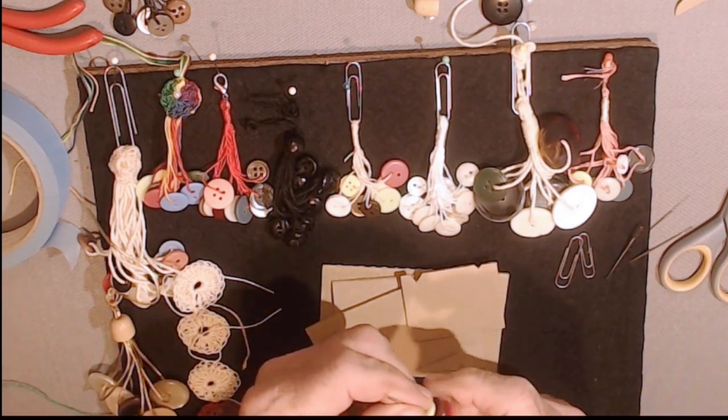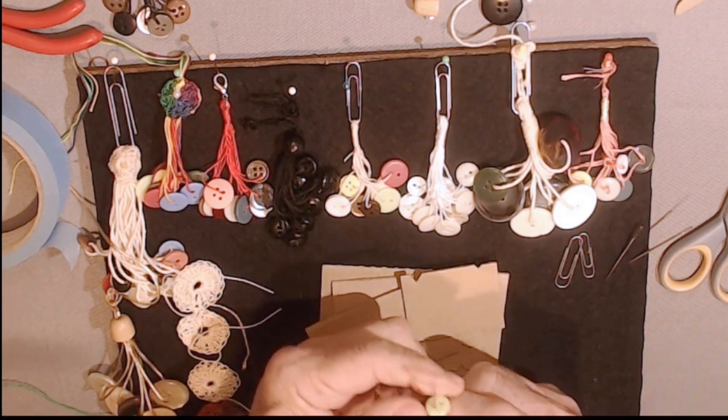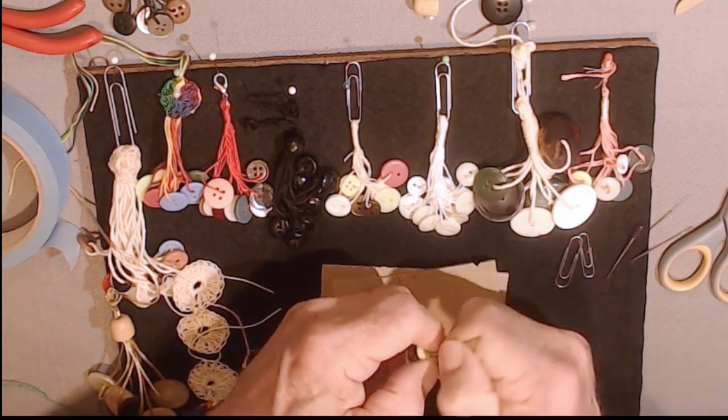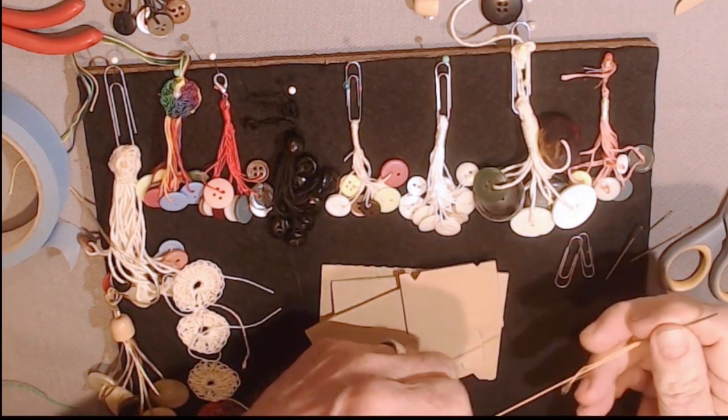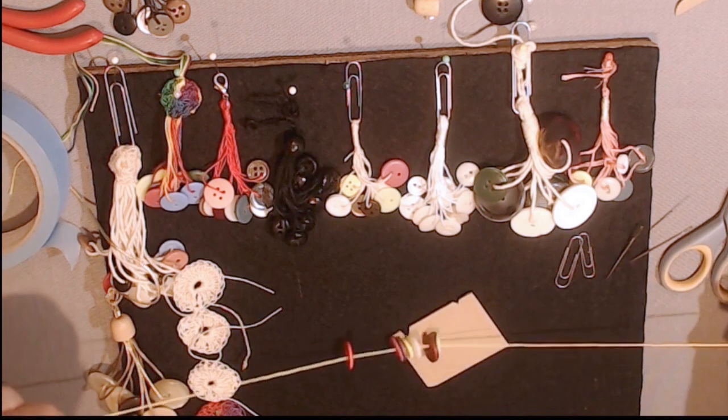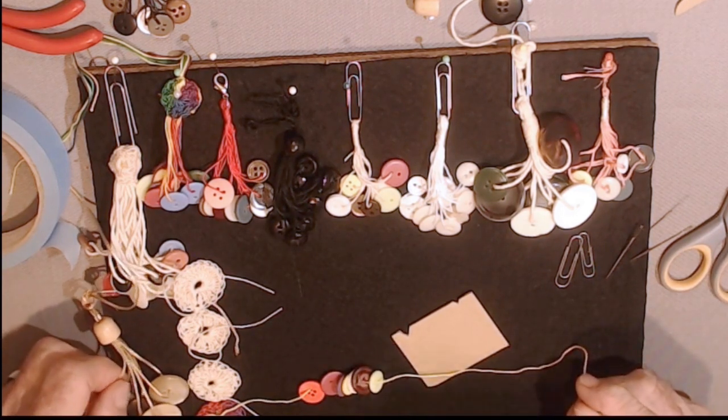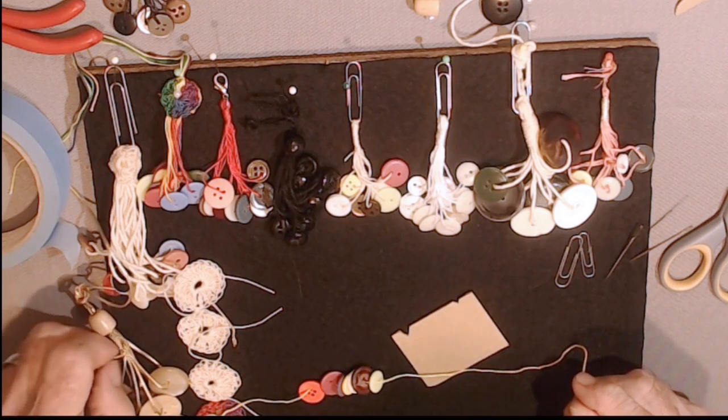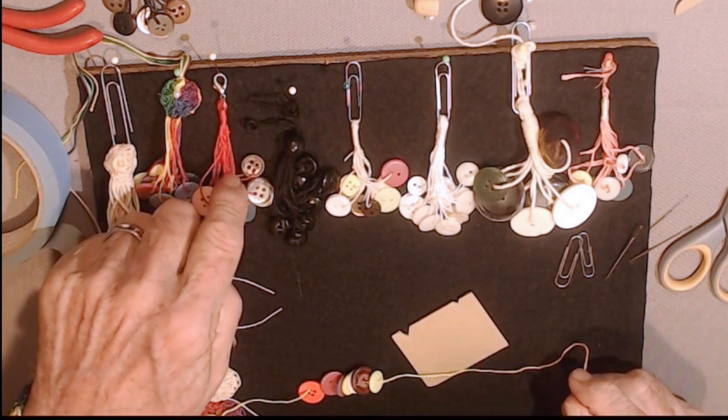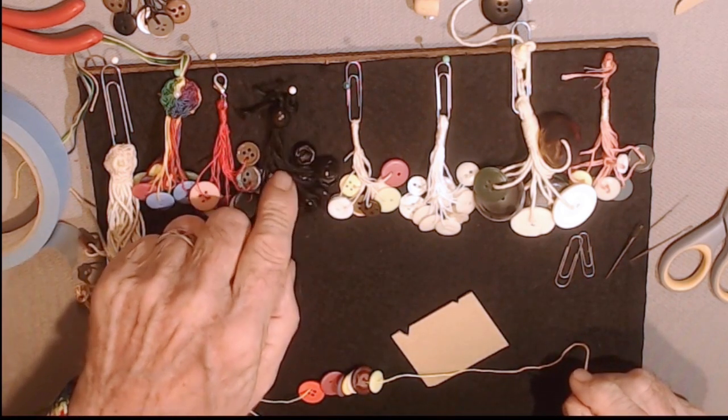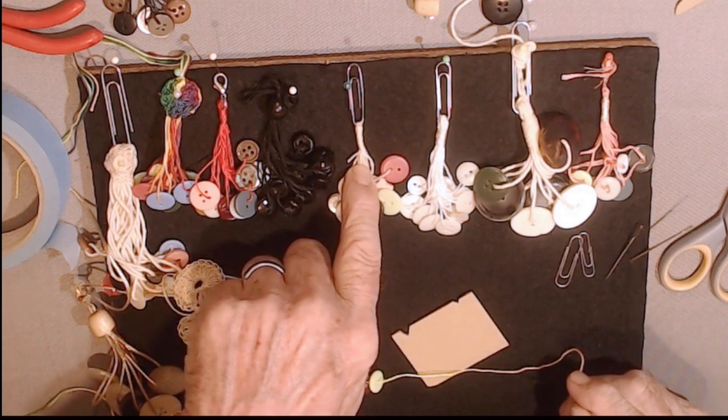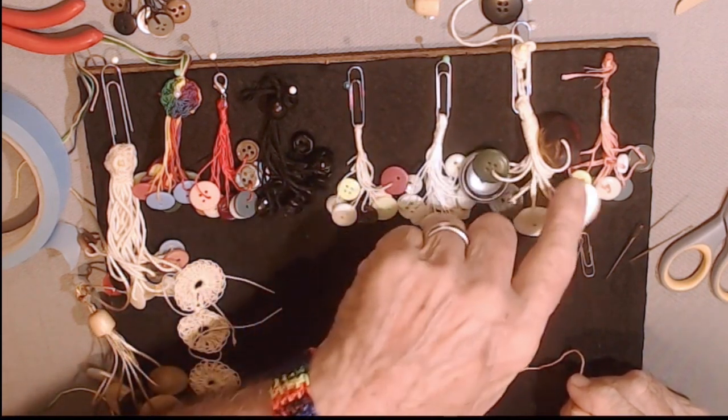You'll see how that notch comes in handy to hold the thread. And then what you do is feed, thread a whole bunch of buttons. I use tapestry needles. Otherwise, there's more blood on the project than is necessary. So you thread the buttons onto the cord, whatever kind of cord you want. I have this gold twine kind of cord. This is ordinary packing twine. This is crochet thread. This black one is embroidery floss. This is cotton crochet thread. So you can do whatever cording you like.